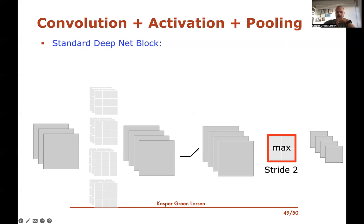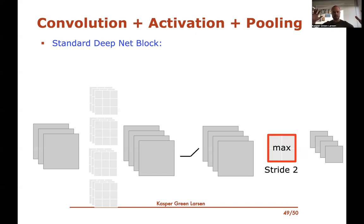A standard building block in a deep neural net for image recognition is: convolutions, then an activation function (applied entry-wise to the neurons), then pooling. For example: four convolutions using 3×3×3 stacked matrices slid across a 3-channel image produce four channels, then a nonlinear activation function is applied, then max pooling with stride 2 reduces the image size. This block expands the number of channels while shrinking the image size.